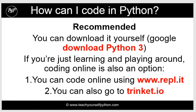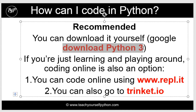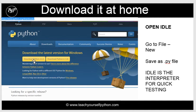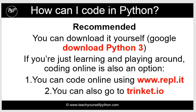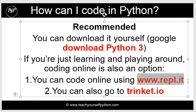Once you've decided on using Python, one of the questions you'll have is how can you actually code in it. You can download it yourself — just Google and type in 'download Python 3' and follow the steps. If you're just learning and playing around and don't want to download it, you can visit a couple of websites that will allow you to code in Python in the browser, which makes it quite simple.